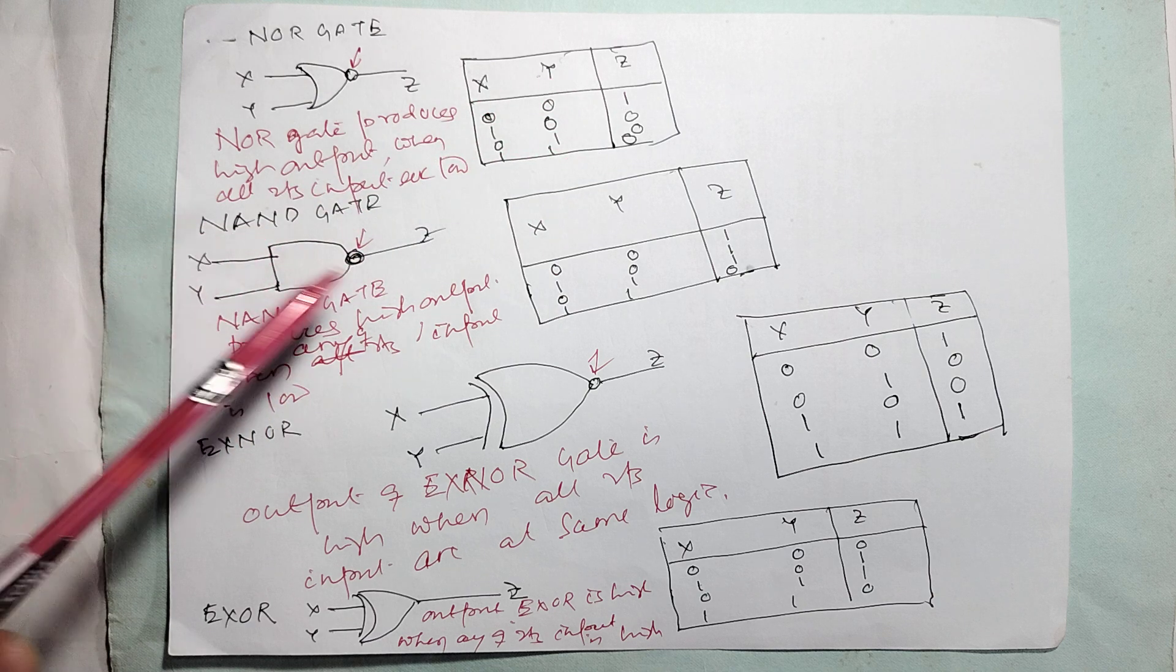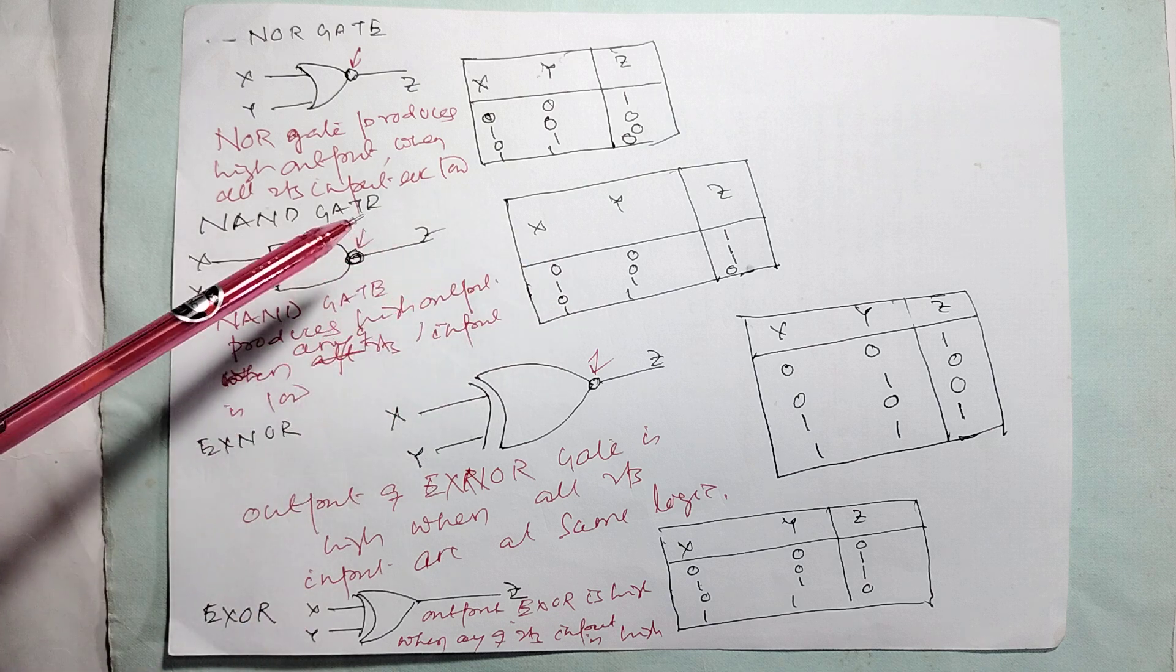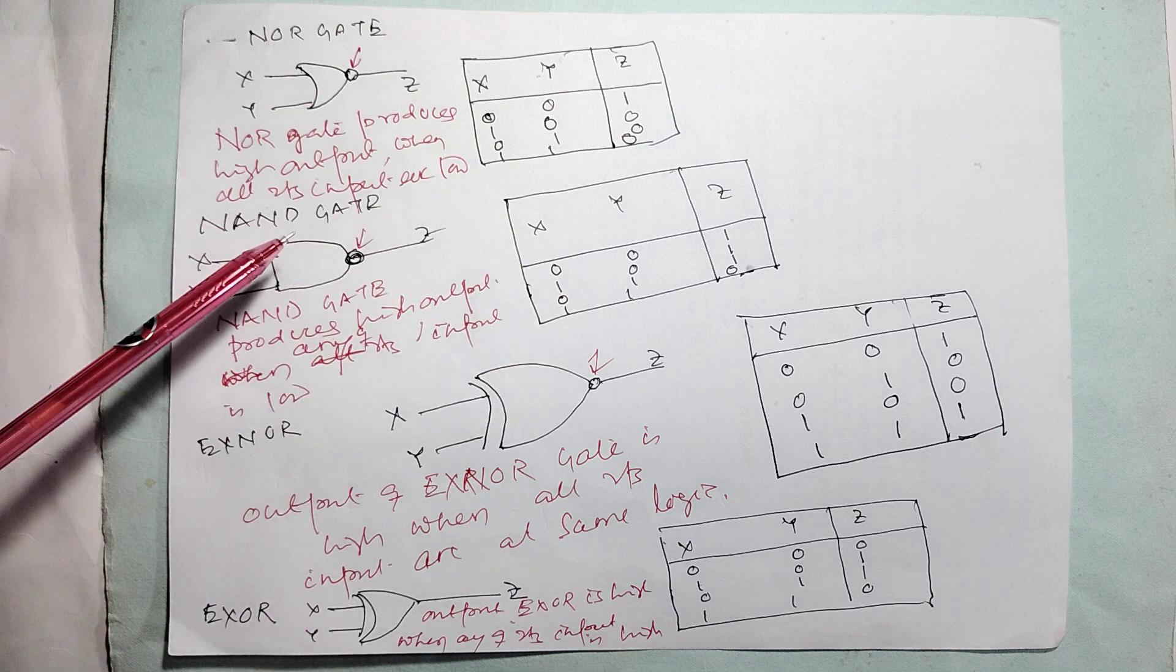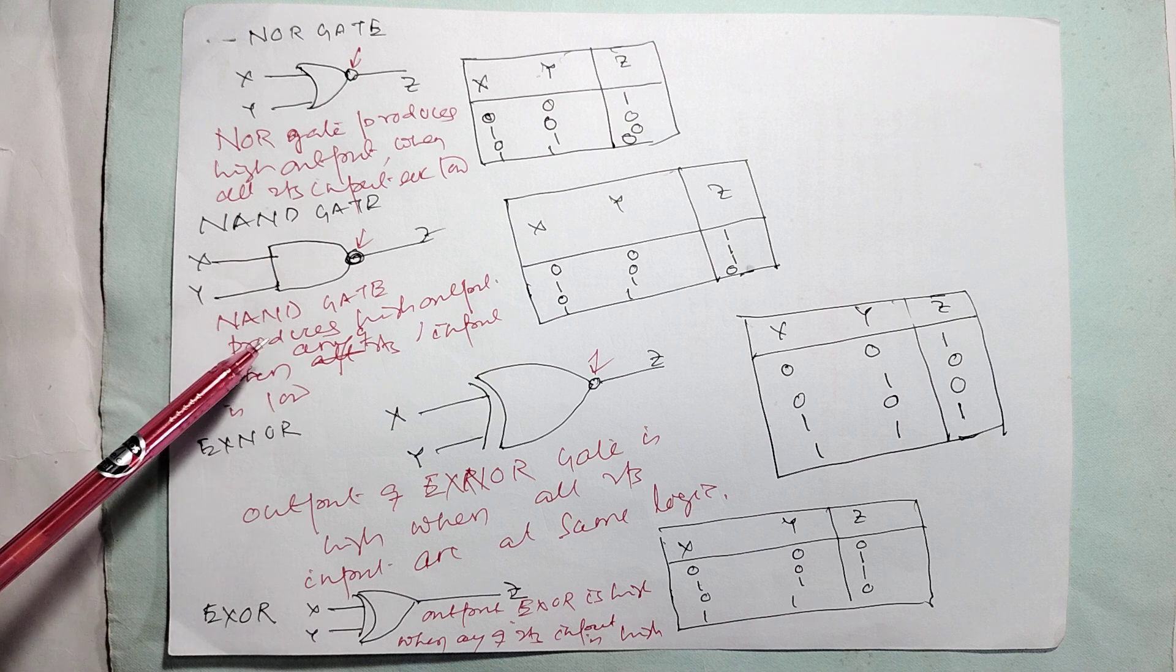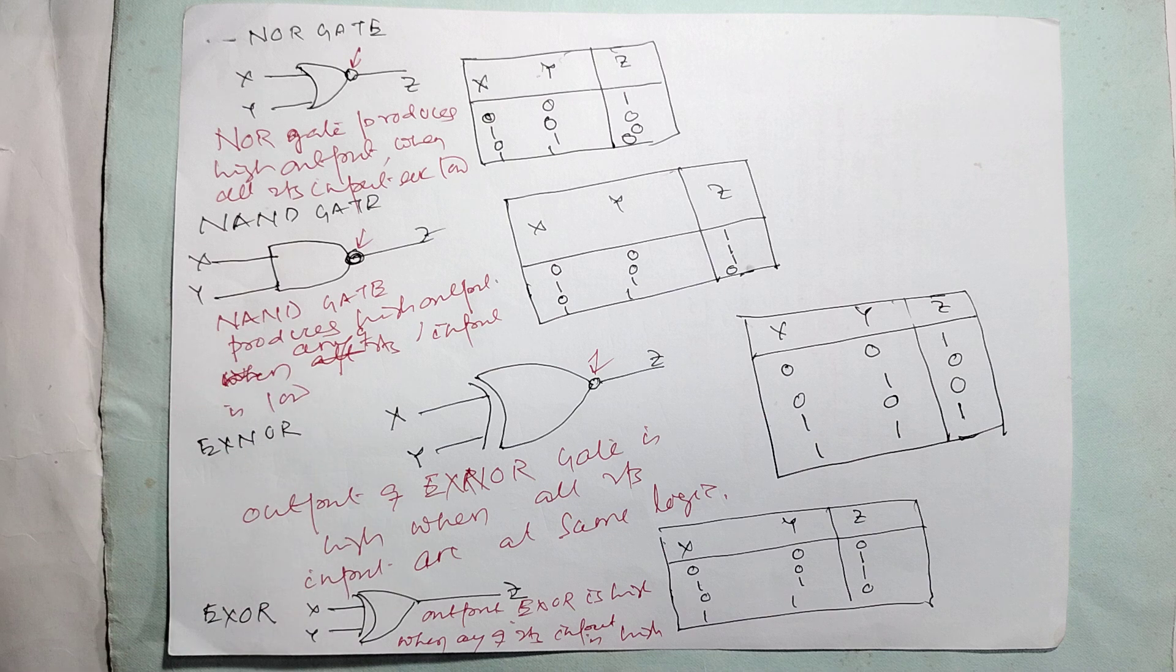And NAND gate. If you know the AND gate truth table, these are the truth tables for NAND gate. Because this inverter is there, so it will be the simple opposite of the AND gate. NAND gate produces high output when any of its input is low.